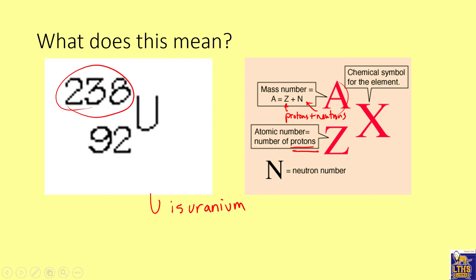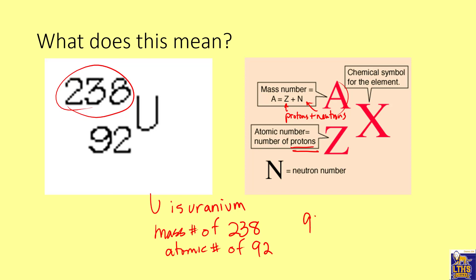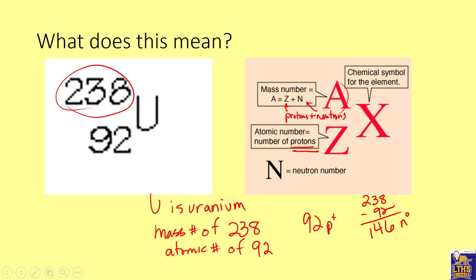Uranium has a mass number of 238 and an atomic number of 92, so it has 92 protons. To find the neutrons: 238 minus 92 equals 146 neutrons. So the mass number equals protons plus neutrons, and the atomic number equals the number of protons.